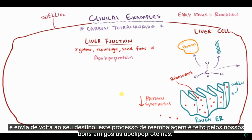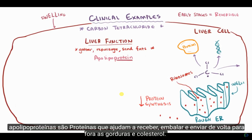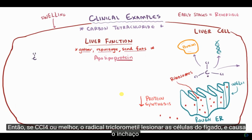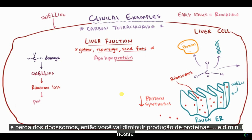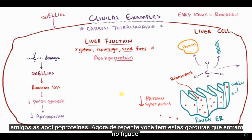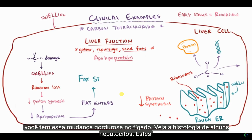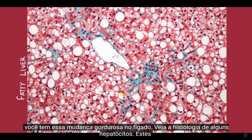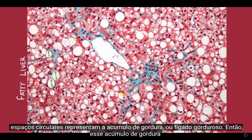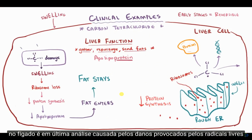Apolipoproteins are proteins that help receive, pack, and send back out the fats and cholesterol. So if trichloromethyl radical damages the liver cell and causes swelling and loss of ribosomes, you'll get decreased production of proteins and a decrease in apolipoproteins. Now all of a sudden you've got fats coming into the liver but not being repackaged and sent back out — the fat doesn't escape, and you get this fatty change in the liver. These circular spaces in the hepatocyte histology represent the accumulation of fat, or fatty liver. So this fat buildup in the liver is ultimately caused by free radical damage.